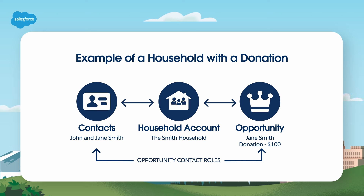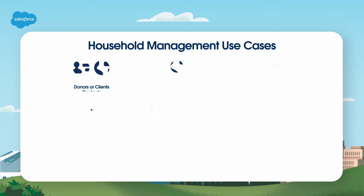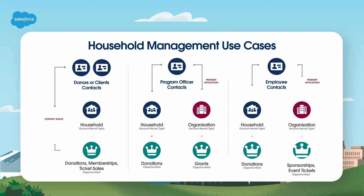By default, NPSP will also give Jane's spouse John a soft credit for the donation, since John is a member of Jane's household. This feature is customizable. Let's look at three more household management use cases.